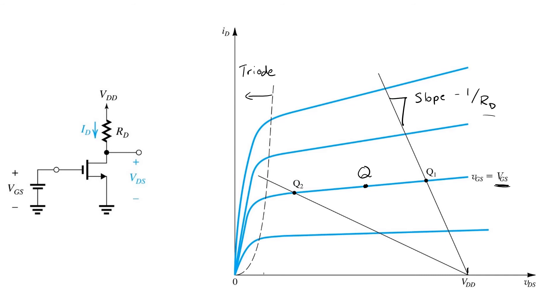Notably, if we choose a different value of RD, a larger value of RD moves the load line in this direction, then we would get an operating point, let's say, somewhere around Q2.